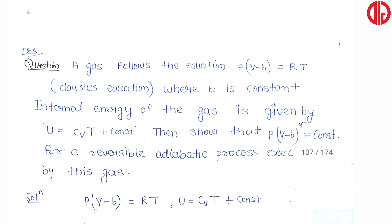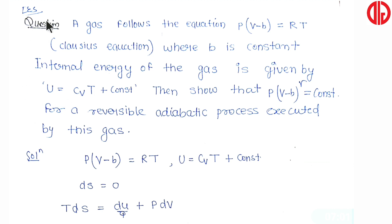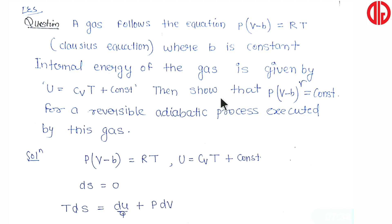Now we solve the next numerical — this is again a very standard problem of engineering services. A gas follows the equation p(v−b) = RT, where b is a constant. The internal energy of the gas is given by u = cv·T + constant. We have to show that p(v−b)^γ = constant for a reversible adiabatic process executed by this gas.